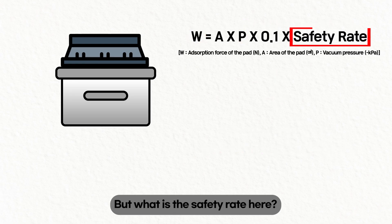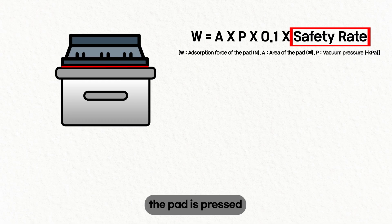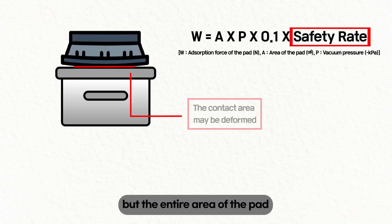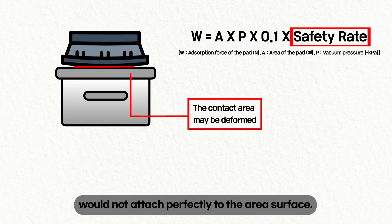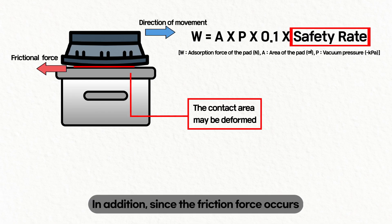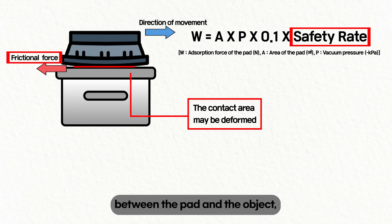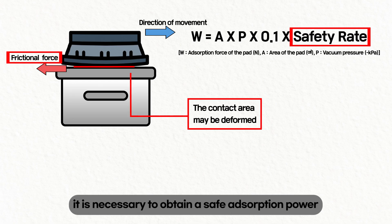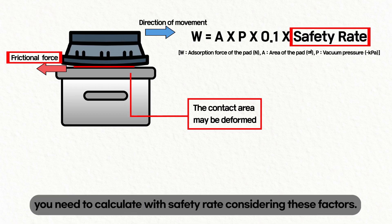But what is the safety rate here? If you absorb an object with an actual pad, the pad is pressed, but the entire area of the pad would not attach perfectly to the object's surface. In addition, since friction force occurs between the pad and the object, it is necessary to obtain a safe absorption power that the actual pad could lift. When you do it, you need to calculate with a safety rate considering these factors.